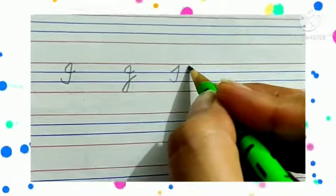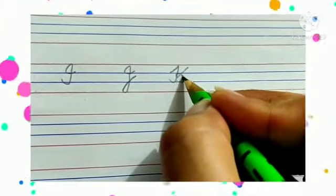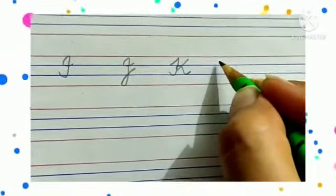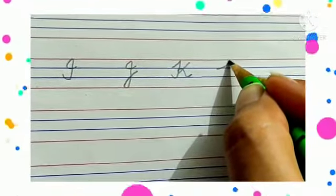Take a small slant, come down, make a curve on the left-hand side. Take one slant, come down, take another slant. K says /k/.